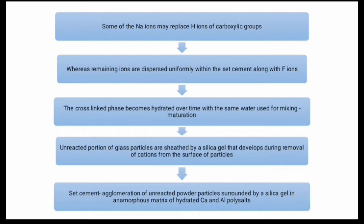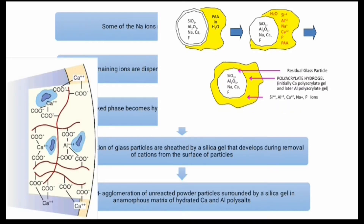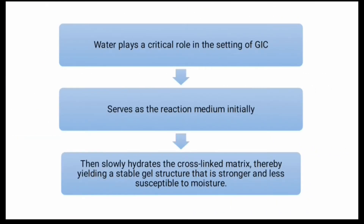Sodium and fluoride ions do not participate in cross-linking. Some sodium ions may replace hydrogen ions of carboxylic groups, while remaining ions are dispersed within the set cement along with fluoride ions. The cross-linked phase becomes hydrated over time. Unreacted glass particles are coated by a silica gel that develops during removal of cations, forming an amorphous matrix of hydrated calcium and aluminum polysalts.